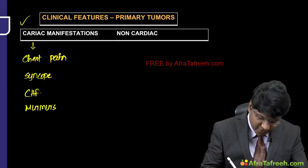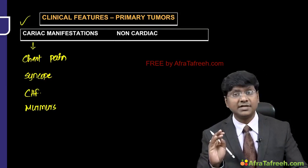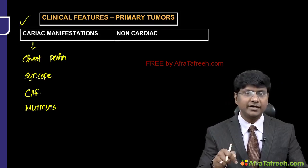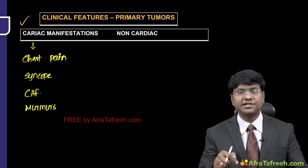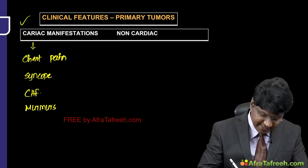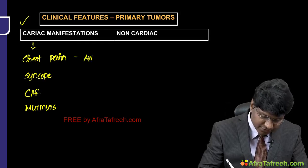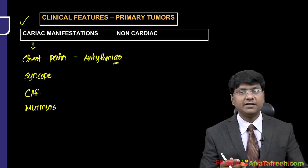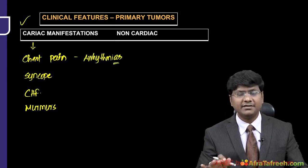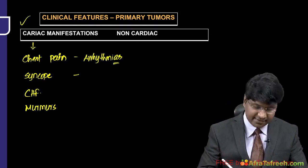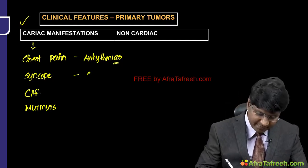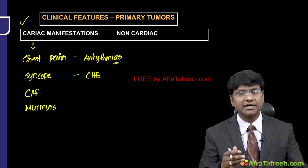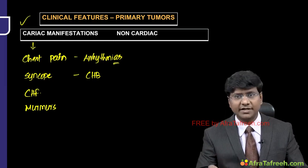Depending upon the location of the tumor — whether in the ventricular inflow or outflow tract — cardiac murmurs can be heard on auscultation. These tumors can also throw arrhythmias where the individual develops VT or VF, leading to sudden cardiac death. Tumors can also cause compression of the AV node, resulting in conduction abnormalities such as complete heart block, bradyarrhythmias, and sudden death.